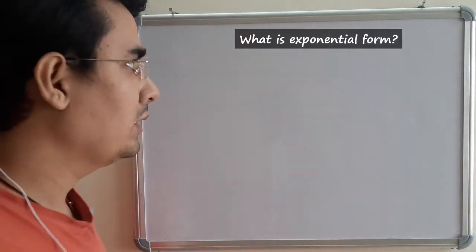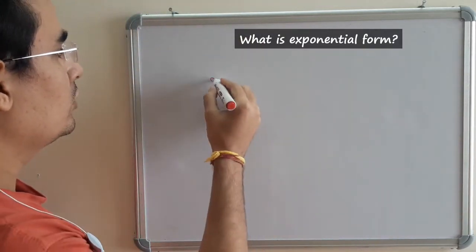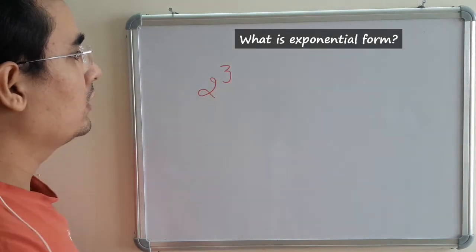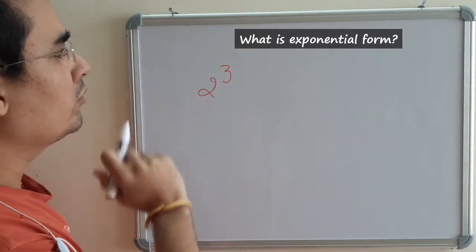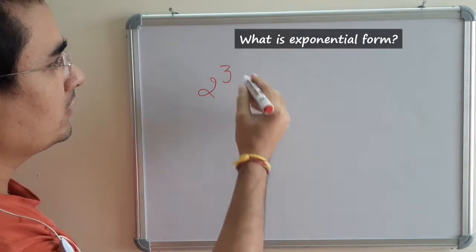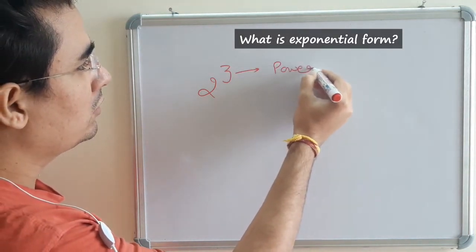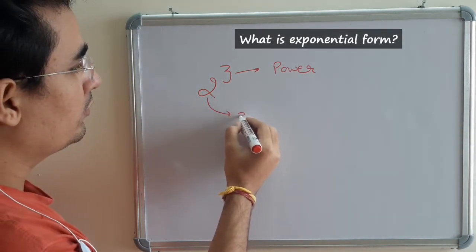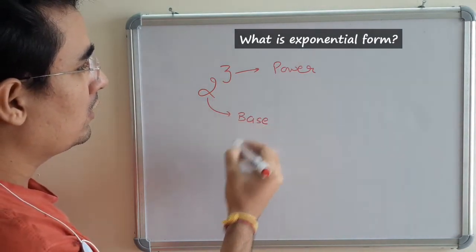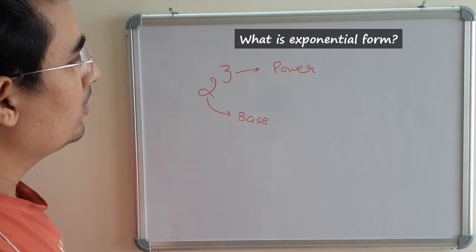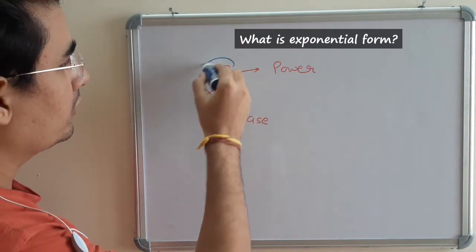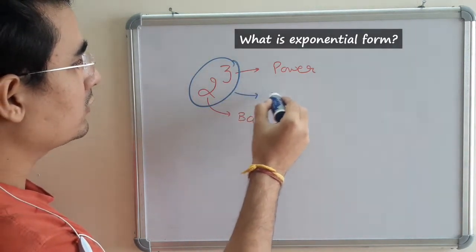One example is 2 raised to the power 3. This particular form is known as exponential form, where 3 is known as the power and 2 is the base. This whole way of writing is known as exponential form.